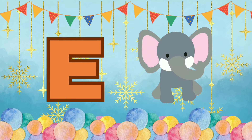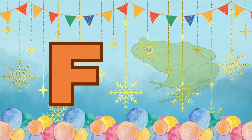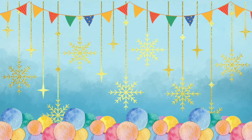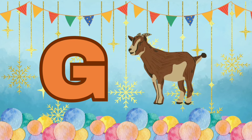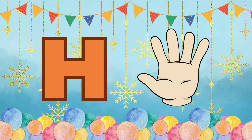E is for Elephant, E-E-Elephant. F is for Frog, F-F-Frog. G is for Goat, G-G-Goat. H is for Hand, H-H-Hand.